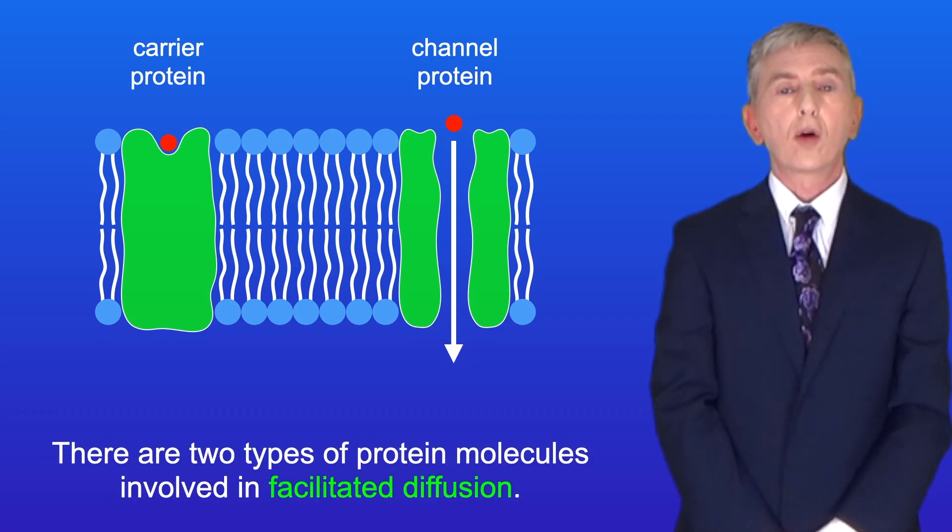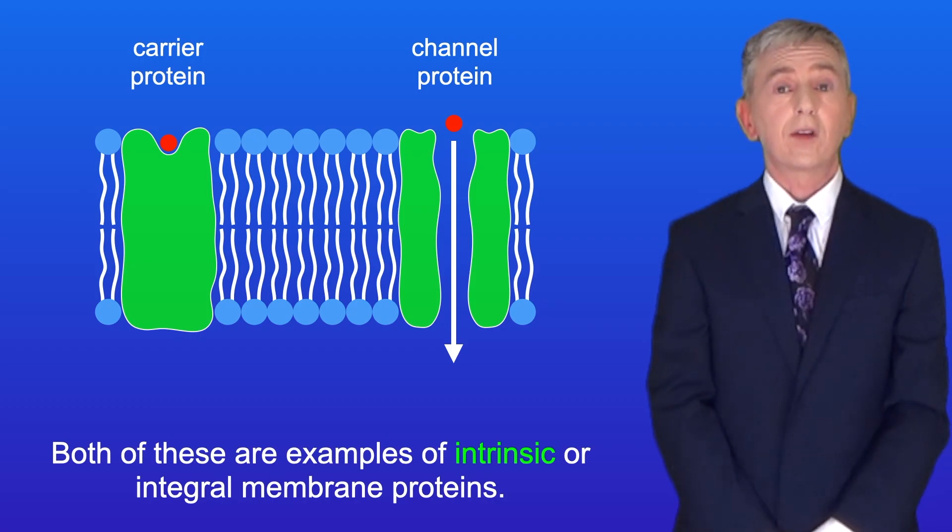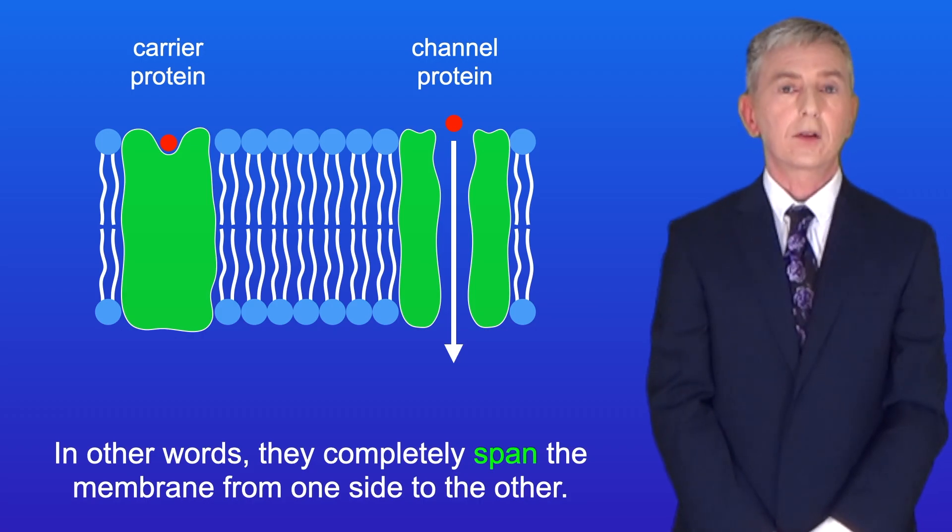There are two types of protein molecules involved in facilitated diffusion, and both of these are examples of intrinsic or integral membrane proteins. In other words, they completely span the membrane from one side to the other.